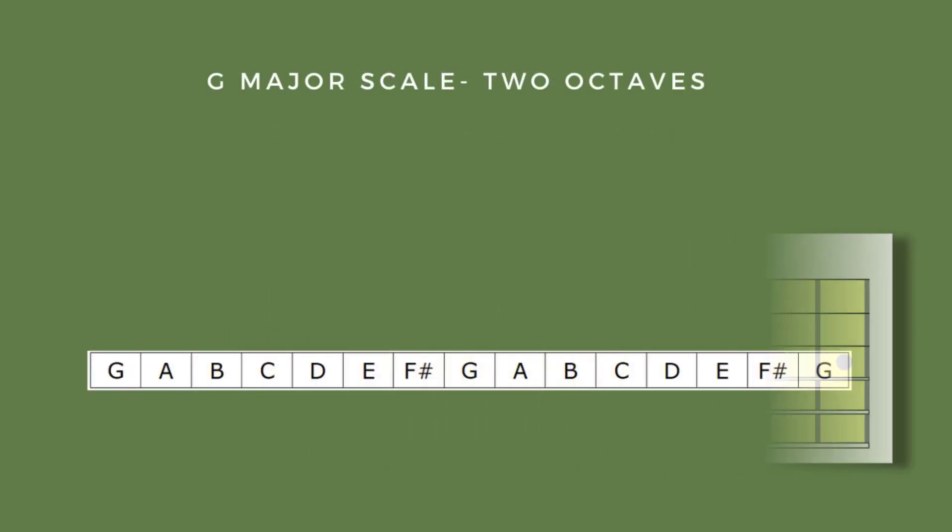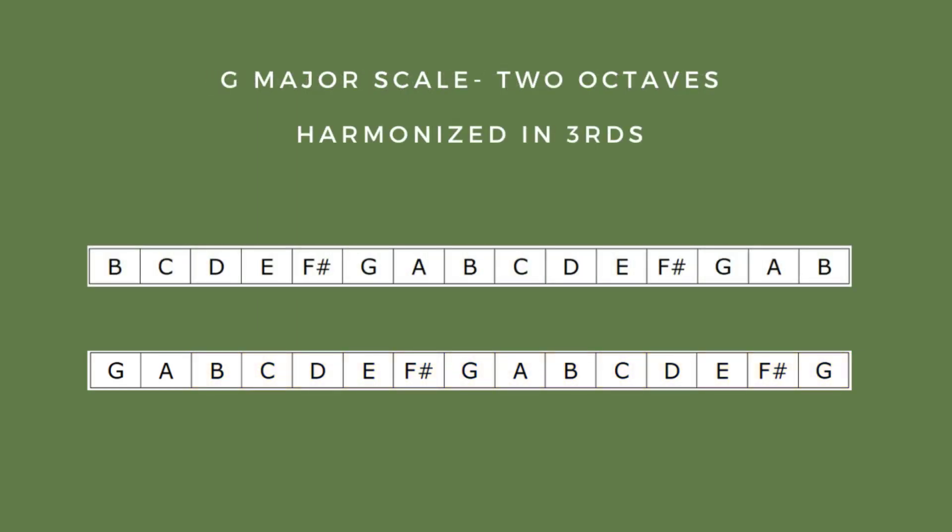The first interval we're going to listen to is the interval of a third. This means we're going to add a harmony note above each note of our G scale. The harmony note will be three notes higher than our original scale tone. On the screen you will see a two-octave G major scale. Now if we were to pick up that scale from the third note—that's from the note B—and layer that new scale over our original scale like this, we would end up with the G major scale harmonized in thirds.